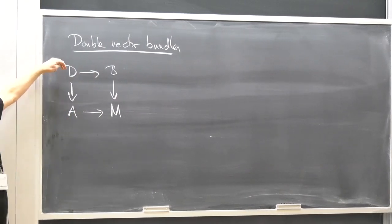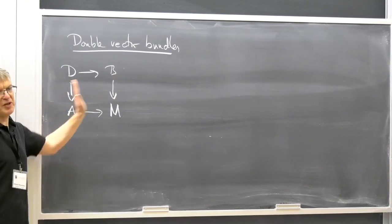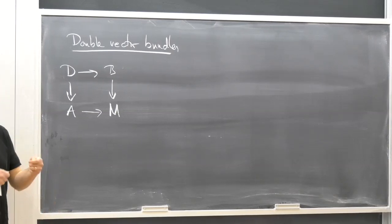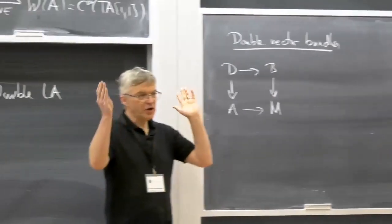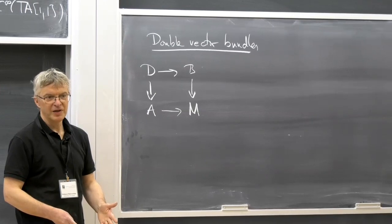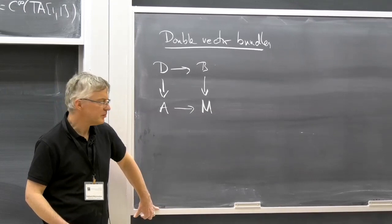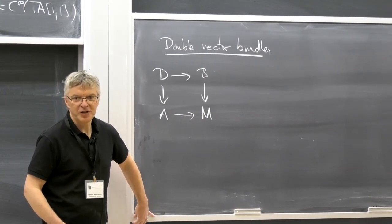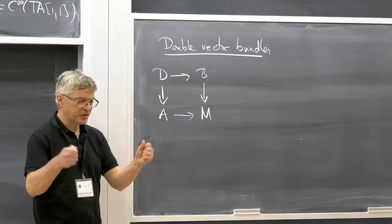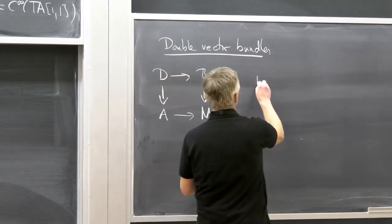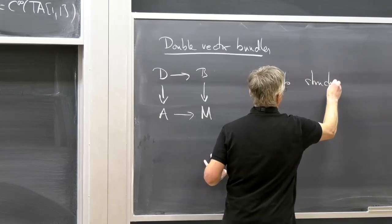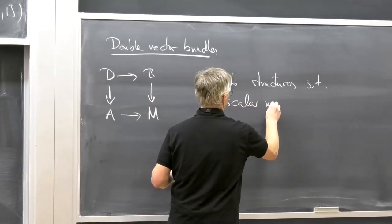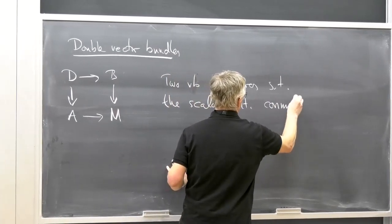If you look at it as a vector bundle vertically, the horizontal map is a vector bundle morphism — and if you spell this out in terms of multiplication and addition, it's a long list of compatibility conditions, I think nine conditions. More recently — probably almost ten years ago — Grabowski and Rotkiewicz realized that this whole list can be reduced to just one condition: two vector bundle structures such that the scalar multiplications commute. That's really all you need.